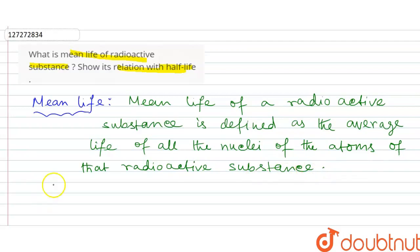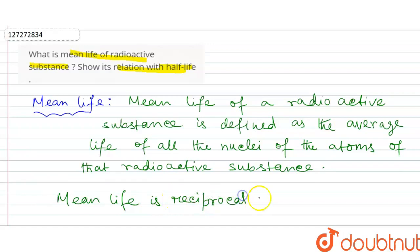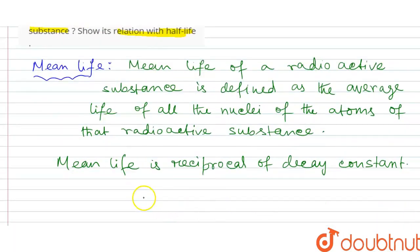Mean life is the reciprocal of decay constant. Mean life tau equals to 1 by lambda, that is τ = 1/λ.